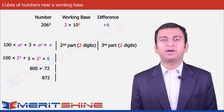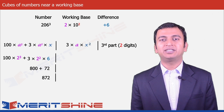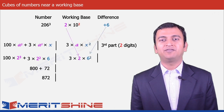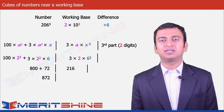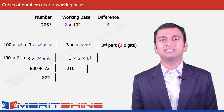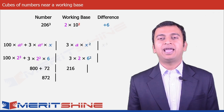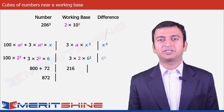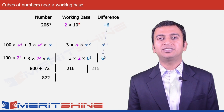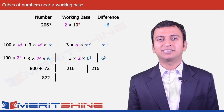The second part, 3ax², would be 3 × 2 × 6² = 6 × 36, giving us 216. And the third part would be 6³, also giving us 216.